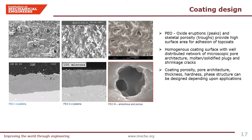The slide shows SEM images of the free coating surfaces and their respective cross sections. On the left image, oxide eruptions and skeletal porosity provide high surface area for adhesion of secondary materials, for example top coats or lubrication. On the middle image, a homogeneous coating surface with a well-distributed network of microscopic pore architecture, molten solidified plugs and shrinkage cracks provides an extremely dense coating. On the right, coating porosity, pore architecture, thickness, hardness and phase structure can be designed depending upon applications. For example, such controlled pore architecture is very useful for optical instruments requiring low reflectivity.